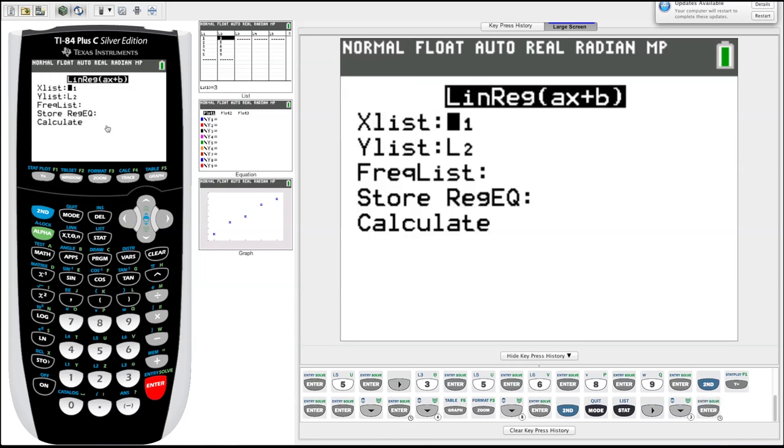Again, it's asking us what's the xlist values, what's the ylist values. List one, list two should default. That's exactly what we have. You can skip over this frequency list option. It shouldn't usually be important. And now it's asking us do we want to store this equation that it's going to calculate for us anywhere.